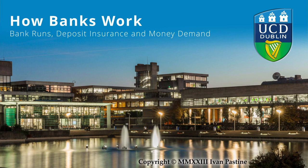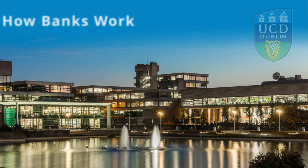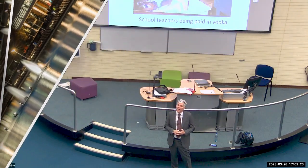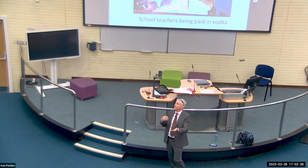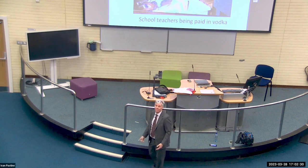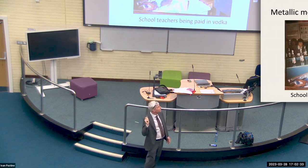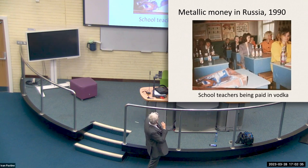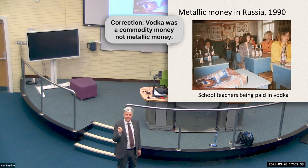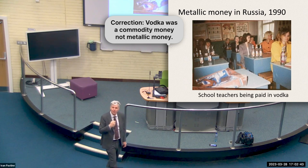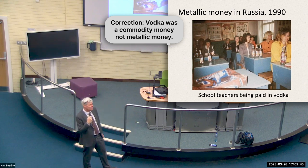At the fall of the Soviet Union they had a desperate need for money, so they started printing money like there was no tomorrow. There was very high inflation and people moved to commodity monies. Here's an example of school teachers being paid in vodka, which is actually very good money if you're going to use a metallic money.